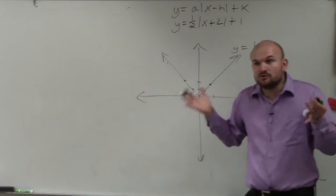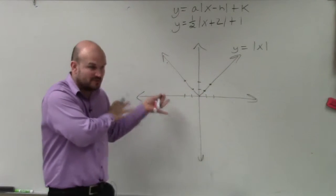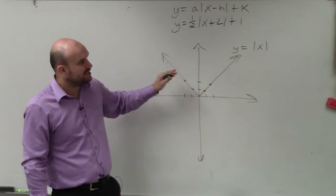So now we need to understand, what are those values going to do to our graph? How are they going to change it? Without creating a table, which you can always do, but you guys can see the table kind of takes a little bit of time, what are these going to change my graph?